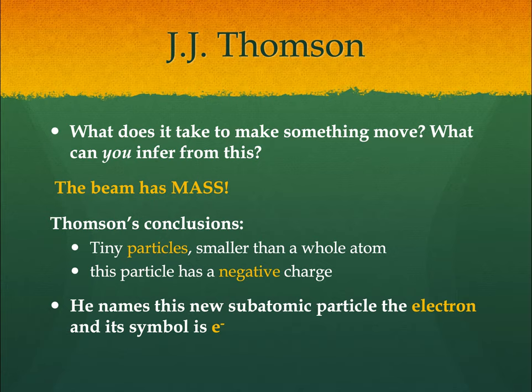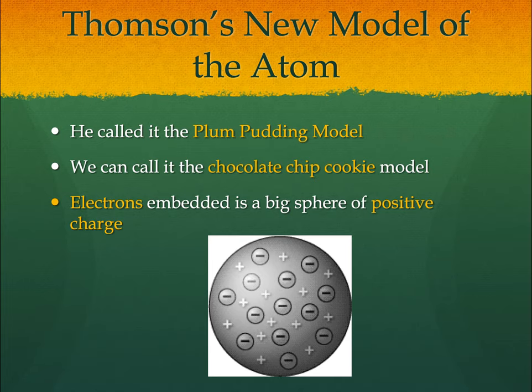Thomson's cathode ray tube experiment told us that we have tiny particles smaller than the whole atom — we no longer just have a neutral sphere. This tiny particle has a negative charge, which we call the electron, represented as e⁻. This new model of the atom he called the plum pudding model — you can call it the chocolate chip cookie model. Essentially we have a big sphere of positive charge with negative electrons throughout. The atom overall is still neutral, but it has both a positive and a negative part.